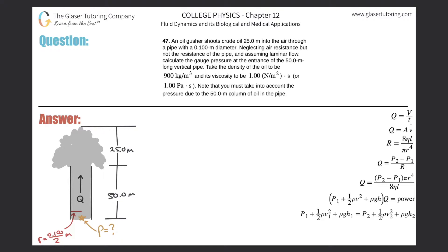Problem 47: An oil gusher shoots crude oil 25 meters into the air through a pipe with a 0.1 meter diameter. Neglecting air resistance but not the resistance of the pipe, and assuming laminar flow, calculate the gauge pressure at the entrance of the 50-meter-long vertical pipe. Take the density of oil to be 900 kg/m³ and its viscosity to be about 1 Pascal-second. Also note that you have to take into account the pressure due to the 50-meter column of oil in the pipe.